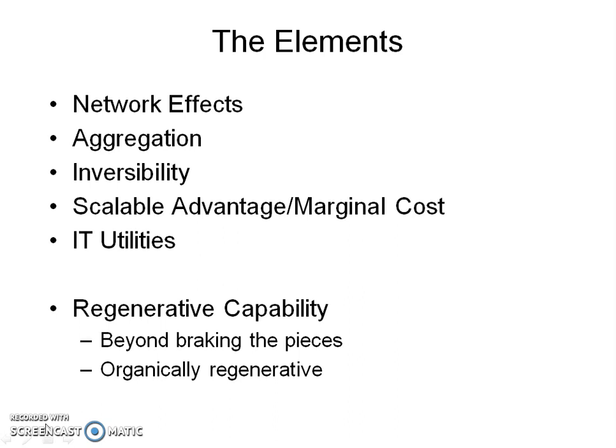One of the ways they do this is by making it possible that the raw material upon which this network effect runs is aggregated. Aggregation basically means that the users are creating the content — the raw material upon which the tech companies, through their platforms, are helping people to make sense of.